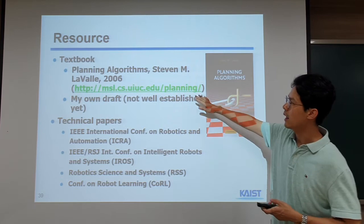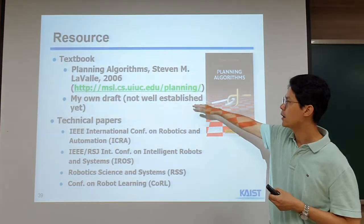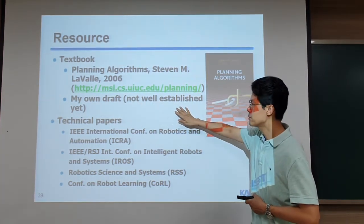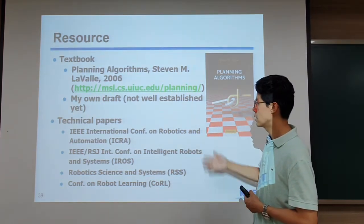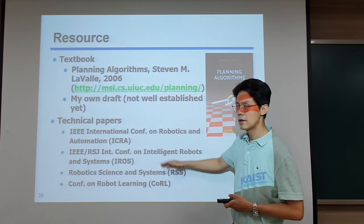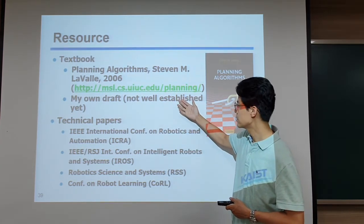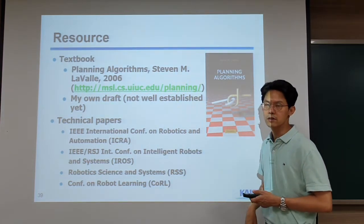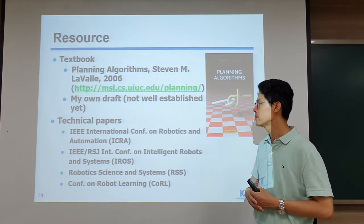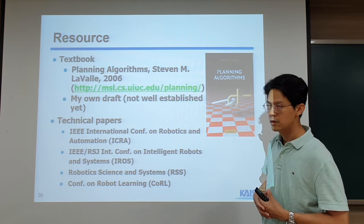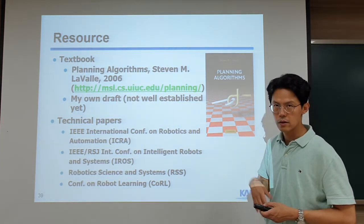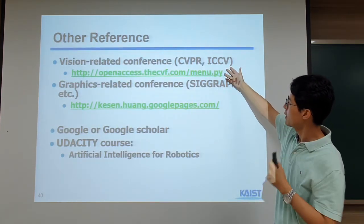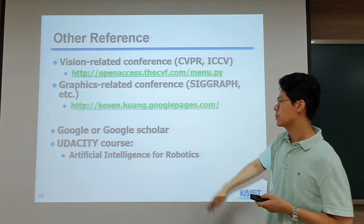The textbook is 'Planning Algorithms,' which is fortunately available freely on the web. I am also working on my own draft, which I will share once it is ready. You can find the main technical papers related to motion planning at ICRA, IROS, RSS, and CORL. There are also many motion planning techniques based on machine learning and deep learning. Many other related conferences include vision conferences like CVPR and ICCV, and graphics conferences.